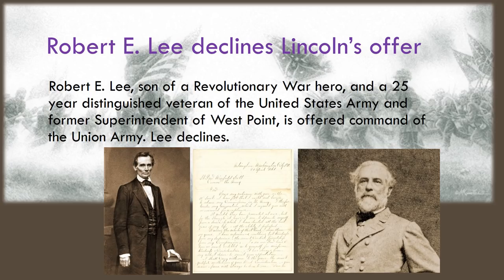Lincoln asks Robert E. Lee — the son of a Revolutionary War hero, a 25-year distinguished veteran of the United States Army, and former superintendent of West Point — to command the Union army. Robert E. Lee, whose home is in Arlington, Virginia, waits to see what the state of Virginia chooses to do and then declines the president's offer because he feels more loyalty towards his state of Virginia.